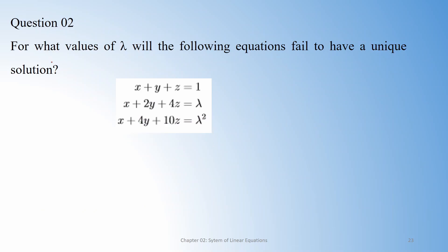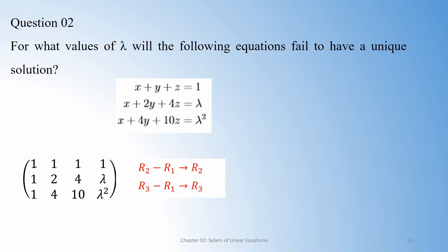Here is one more example: for what values of lambda will the following equations fail to have a unique solution? Similarly, we start with the augmented matrix and convert it into row echelon form. The augmented matrix is: first equation 1 1 1 1; second equation 1 2 4 lambda; third equation 1 4 10 lambda squared. We multiply the first row by minus 1 and add into the second and third rows to make those entries 0.